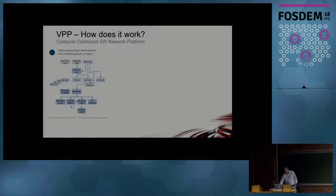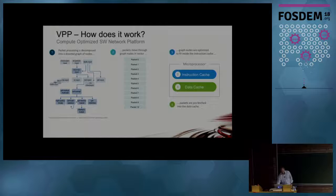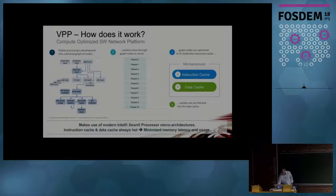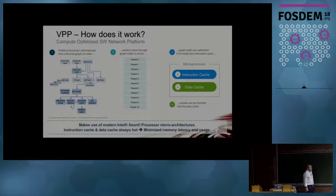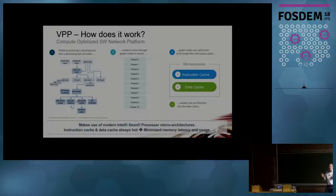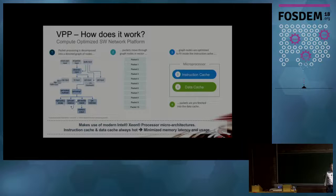Why is VPP fast? What VPP does is read packets and forward them. It handles layer two, layer three, and now we also have layer four. What is extremely important to understand is the secret sauce of VPP.